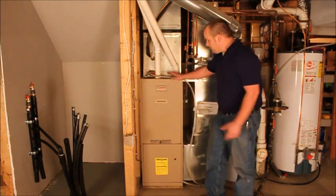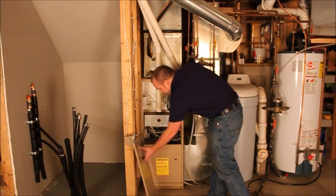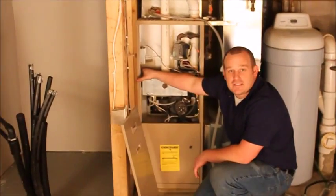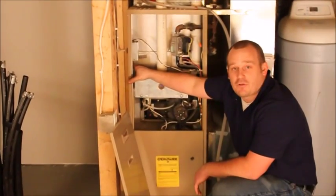So to do that, we start by pulling the faceplate off the furnace. Inside the faceplate, we're going to see exactly what the rating of the furnace is, so you know how much heat it's putting out when it's on.